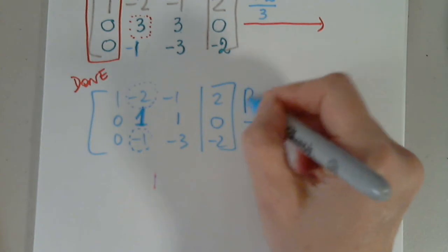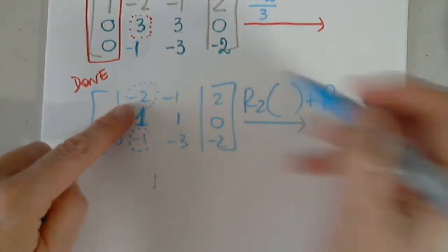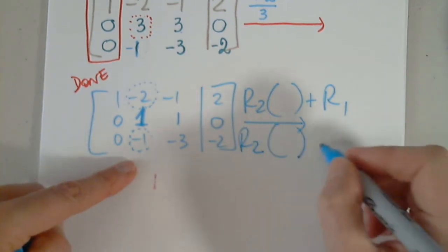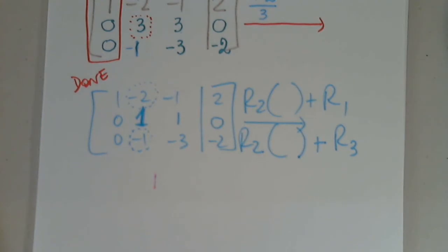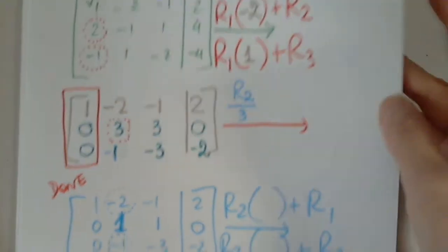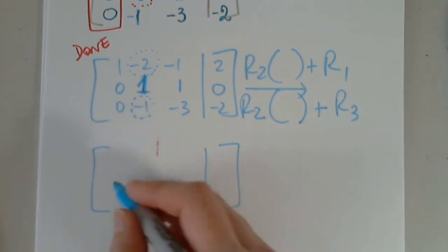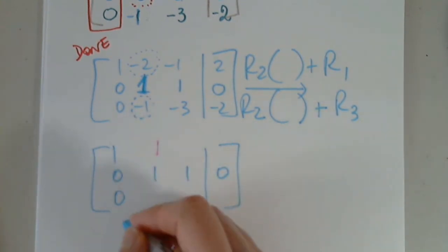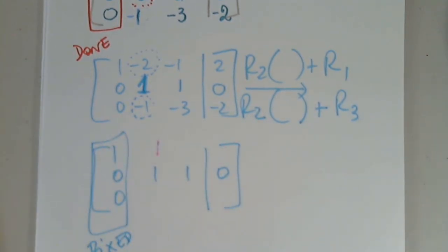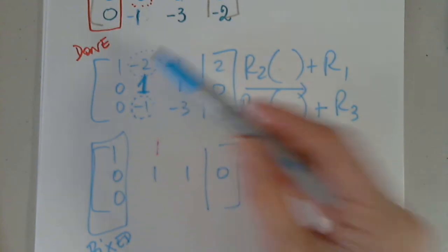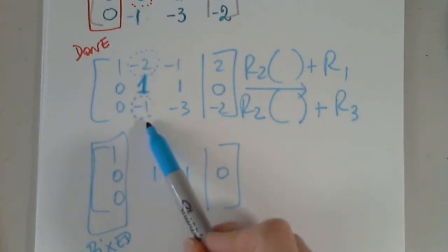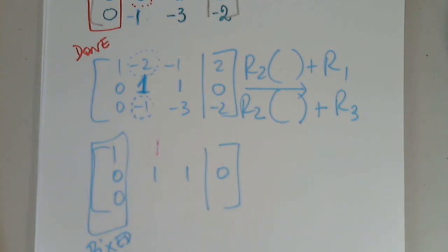We have to use row two now, multiplying it by something to add it to row one and eliminate this, and row two multiplied by something to add it to row three to eliminate this. Notice that in the first step we used row one. In the second step we have to use row two, and this is the only row that will not change at this point. I cannot change the first column — that has to be fixed. If I change the first column, I go backwards and will not solve. What do we multiply one by to eliminate negative two? What do we multiply one by to eliminate negative one?